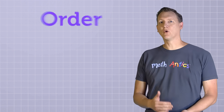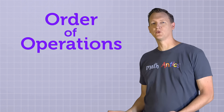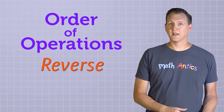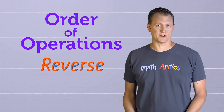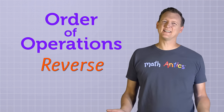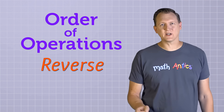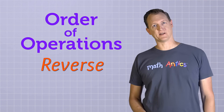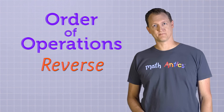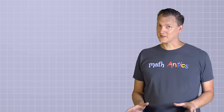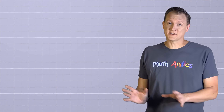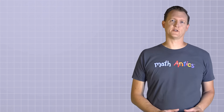When solving multi-step equations, that's basically what we're going to do. Using the order of operations rules in reverse can help us know what order to undo operations in. But it can be a little tricky putting it into practice. So, to see how it works, let's start by solving a very simple two-step equation.